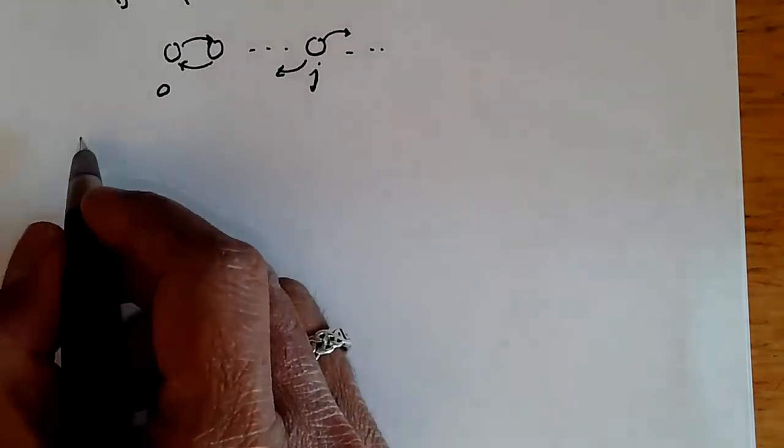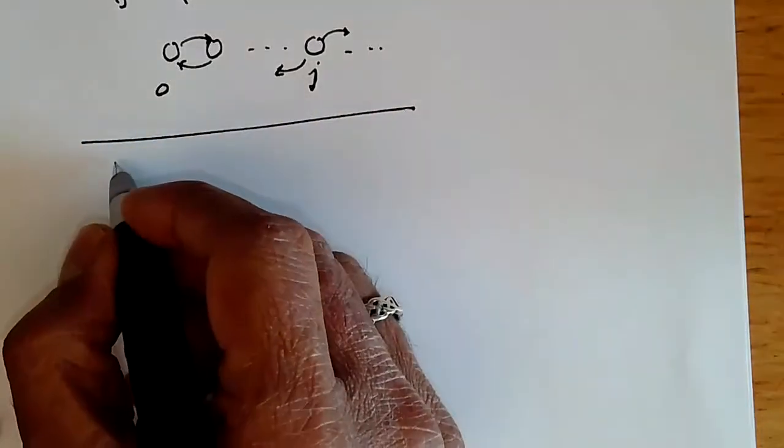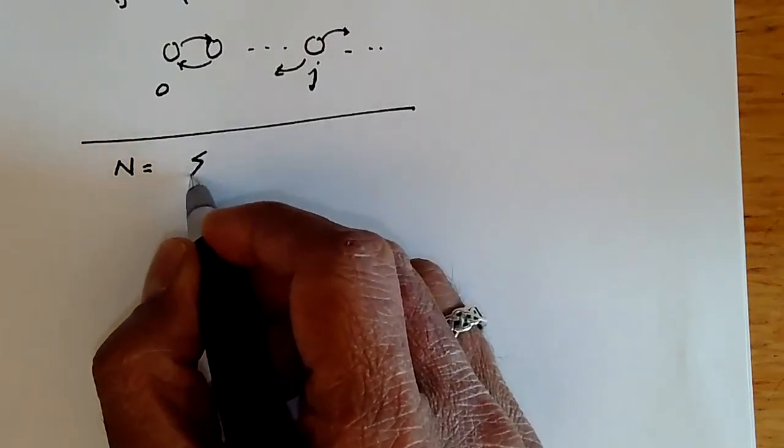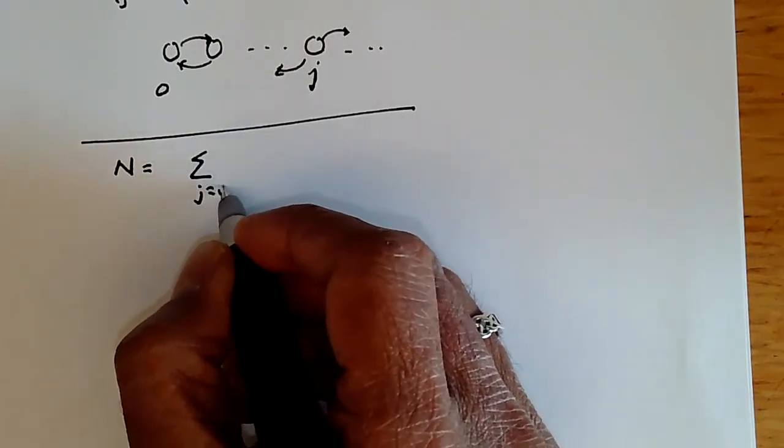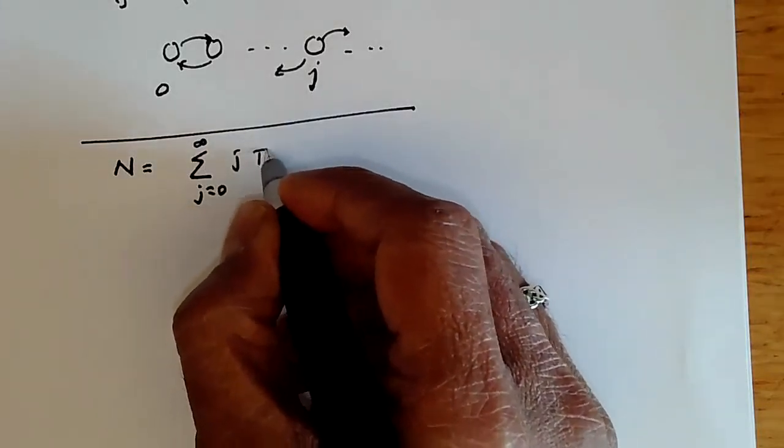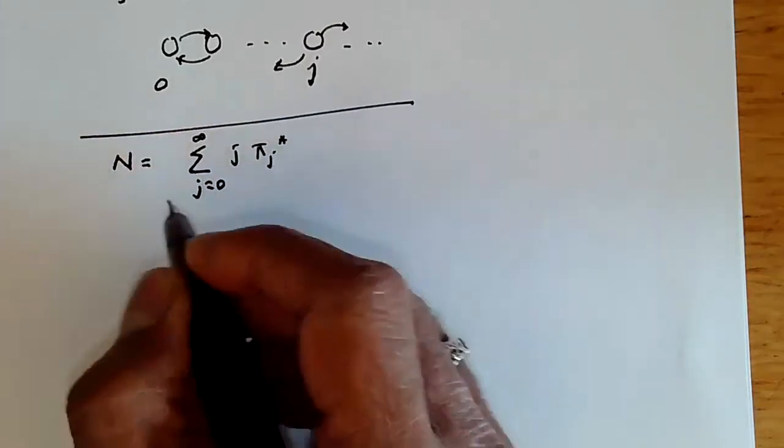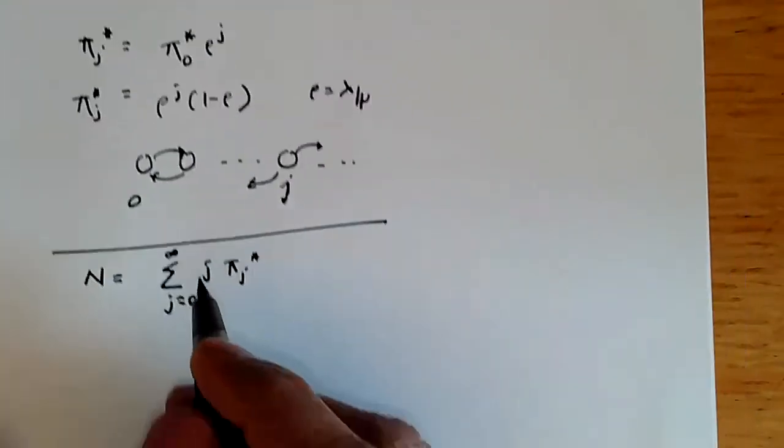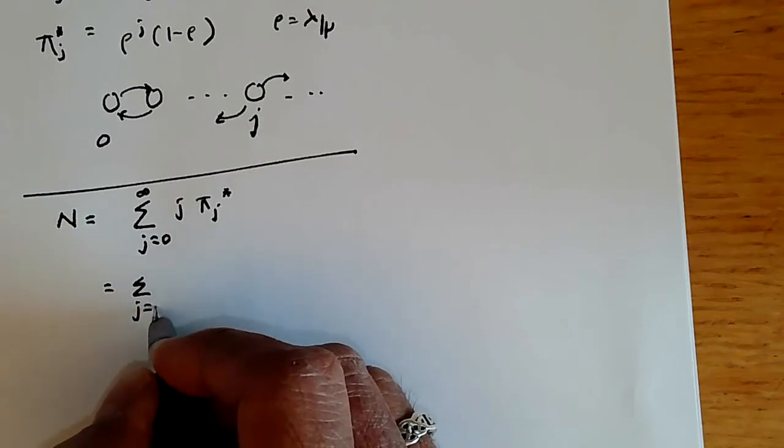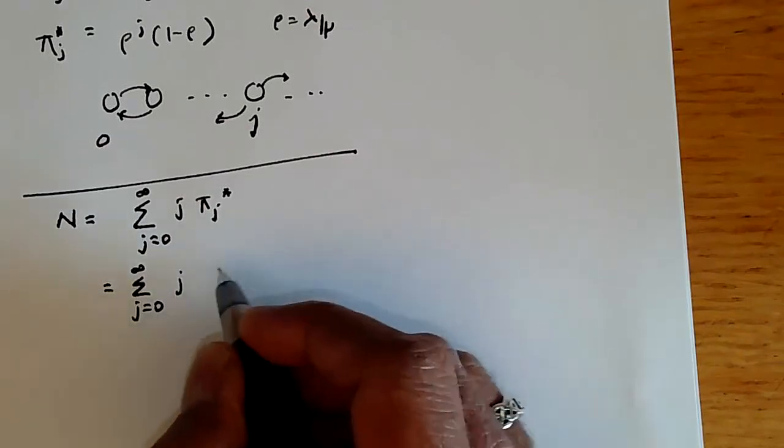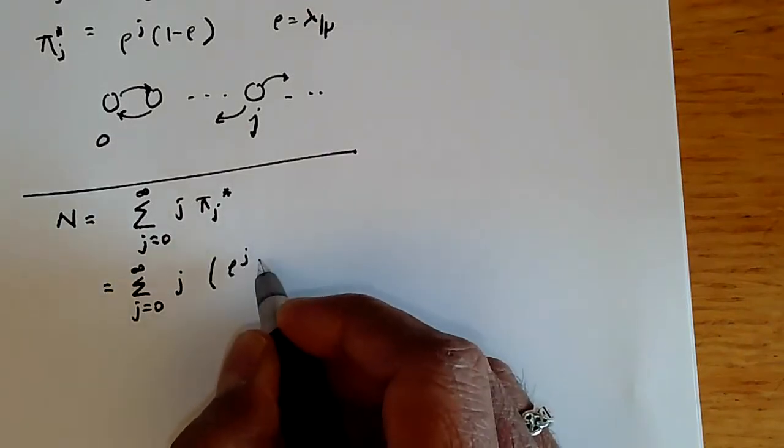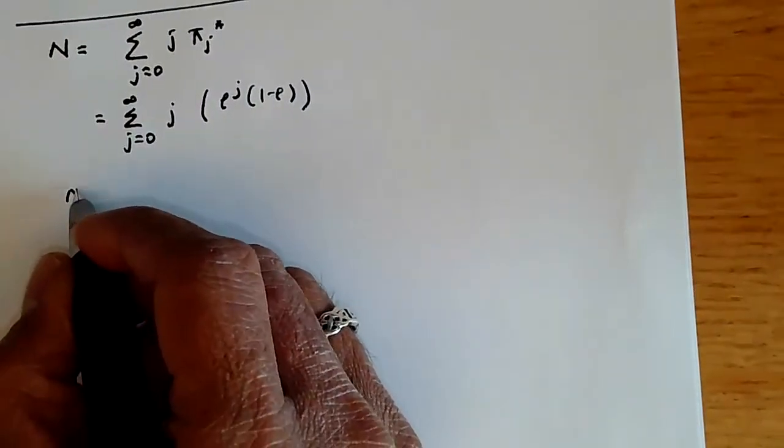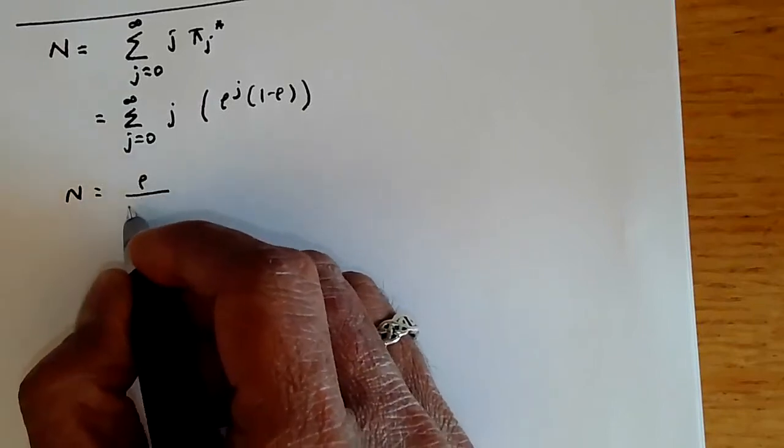How many customers are in the queue on average? Remember, we denoted this by N. N is given by the sum j equals 0 to infinity of j times pi j star. From this equation where pi j star is rho to the j times 1 minus rho, this is summation j equals 0 to infinity j times rho to the j times 1 minus rho. If you expand this out, we'll find that N is given by nothing more than rho over 1 minus rho.